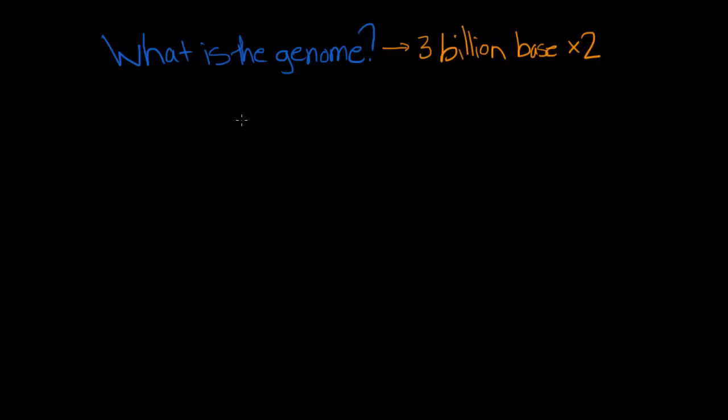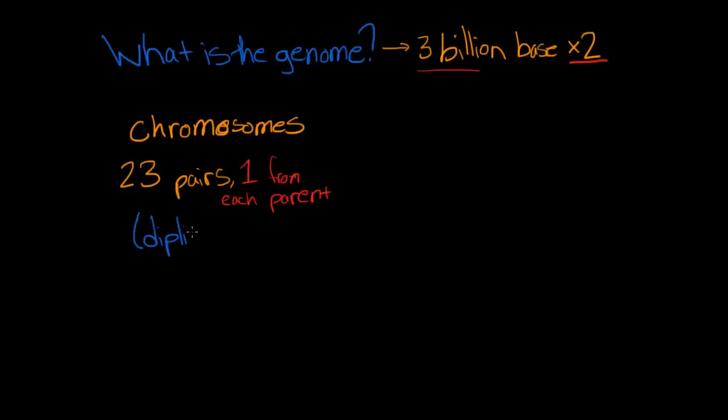Another species genome could contain either more or less than that, depending on the organism. In humans, these three billion base pairs are organized into 23 chromosomes. And we actually have 23 pairs of chromosomes, one set from each parent. And so this is why we have that three billion times two. Because half we get from our mother and half from our father. And they each have half from each of their parents. And this results in what we call diploid. Humans are diploid.